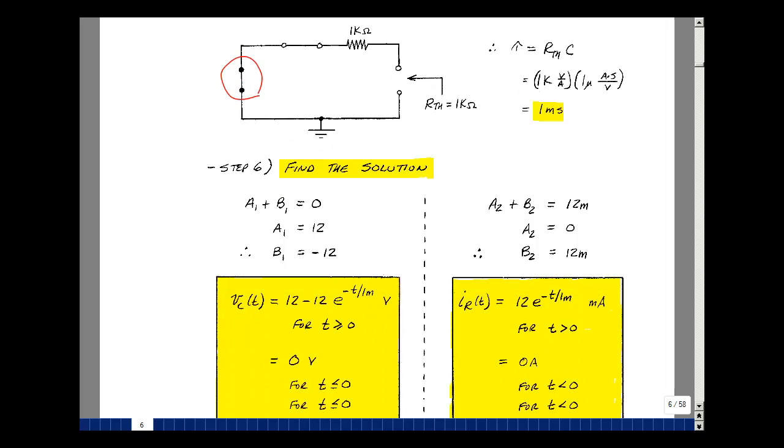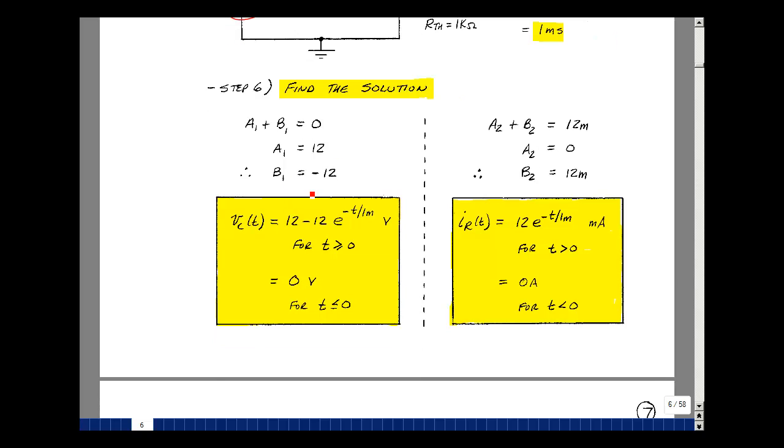Now we can find the solution. That's our Step 6. I know that A1 plus B1 is 0. I found that A1 was 12, so B1 is minus 12. So the voltage across the capacitance was 0 before we flipped the switch. And after we flipped the switch, it now follows this equation. A1 plus B1 times e to the minus T over tau. If you evaluate this, when T is equal to 0, you get 12 minus 12 or 0. So the voltage across the capacitance is continuous. We can't jump from one value to another. Let's look at the current in the resistance. We found that A2 plus B2 was 12 milliamps. We found that A2 was 0, therefore B2 was 12 milliamps. So our equation then would be 12 e to the minus T over tau, milliamps. When T was less than 0, we had 0 current flowing because the switch was open. But we've seen an abrupt change in the current in the resistance. It went from 0 to 12 milliamps instantaneously. So you can get very abrupt changes in currents in any element, including a capacitance, but the voltage across the capacitance cannot change instantaneously.